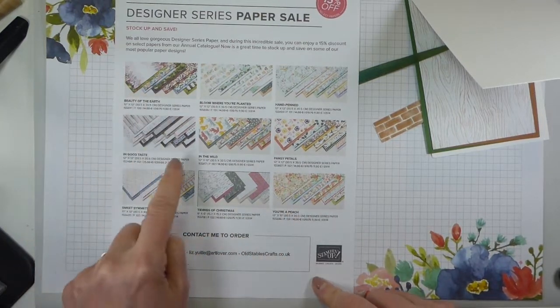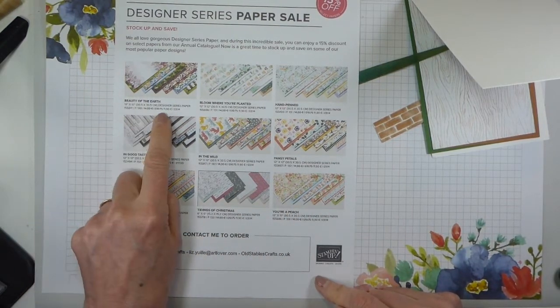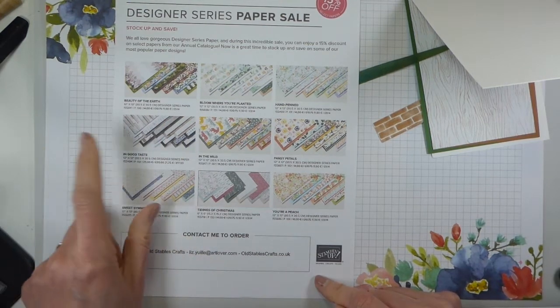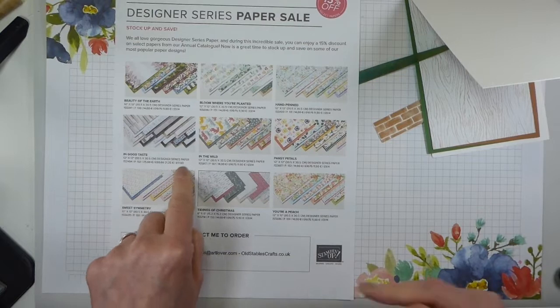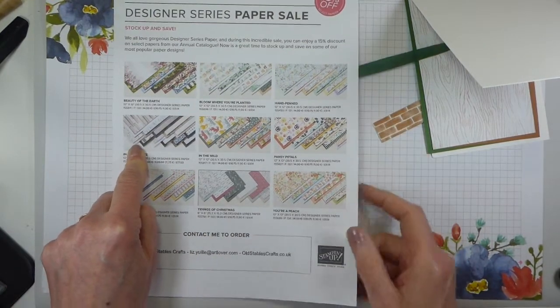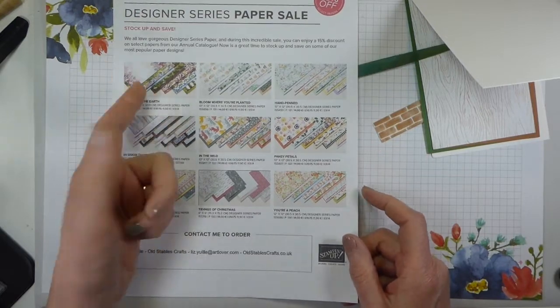The standard size packs are reduced from £10.75 to £9.14, and the In Good Taste is reduced from £20 to £17. This is the one that has 12 patterns and two of each, as opposed to six patterns and two of each.